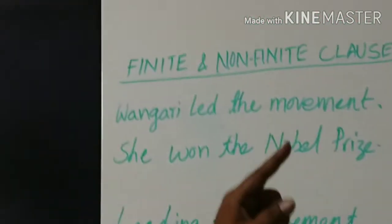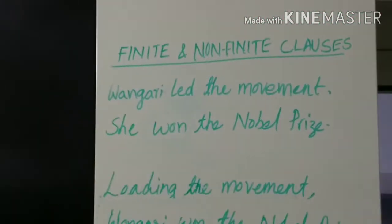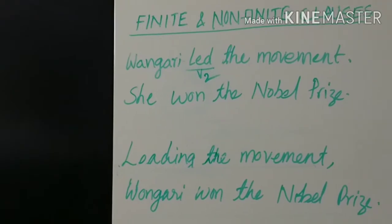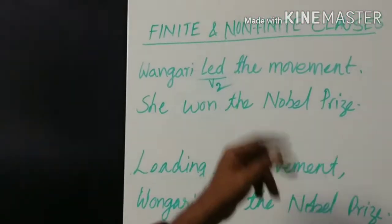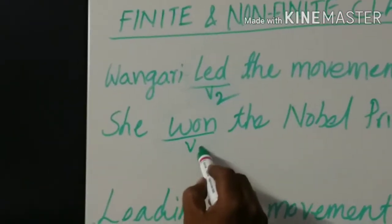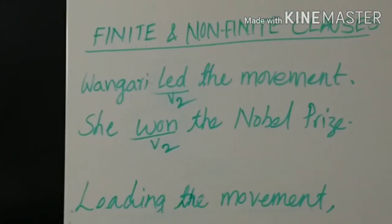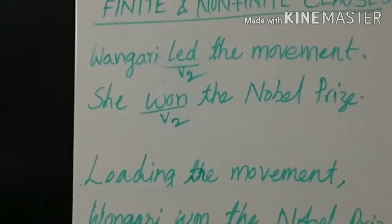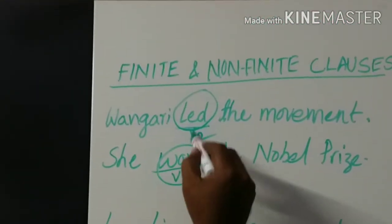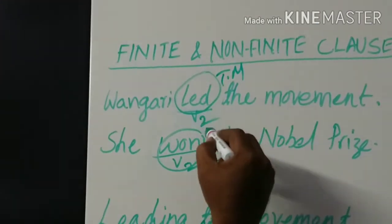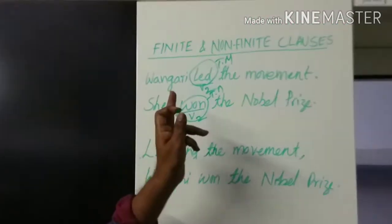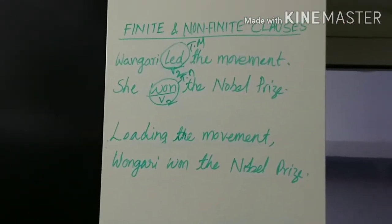First example: 'One girl led the movement.' Here you can find a tense marker — it is in V2, so the tense of the sentence is simple past. The next sentence: 'She won the Nobel Prize.' 'Won' is also in V2, so the sentence is in simple past. 'Led' and 'won' are called tense markers. By these tense markers we can understand that both sentences are in simple past.